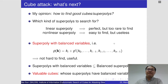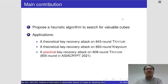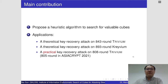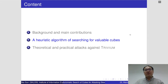The main contribution of this paper is that we propose a new heuristic algorithm to search for valuable cubes. As applications, we improve the theoretical cube attacks against Trivium and Caribou as of the paper submission last year. We also improve the practical key recovery attack against Trivium, and this is the best practical result now. Next, let's see the search algorithm.